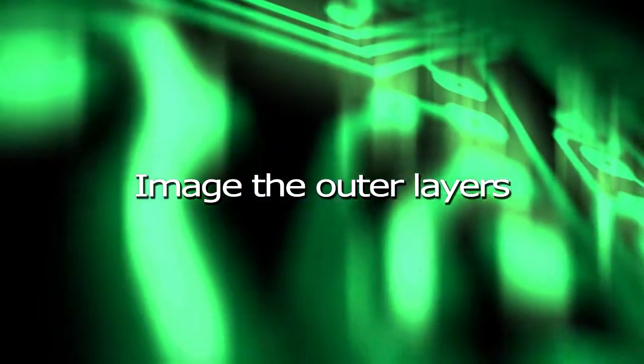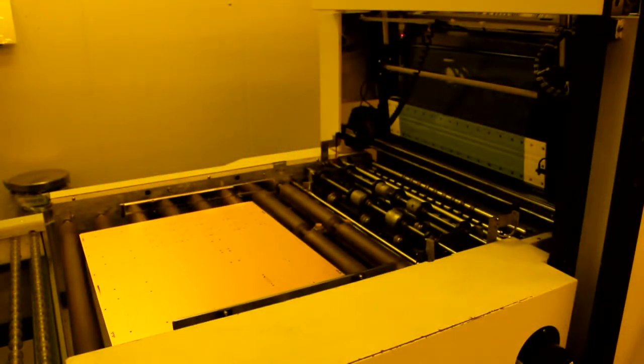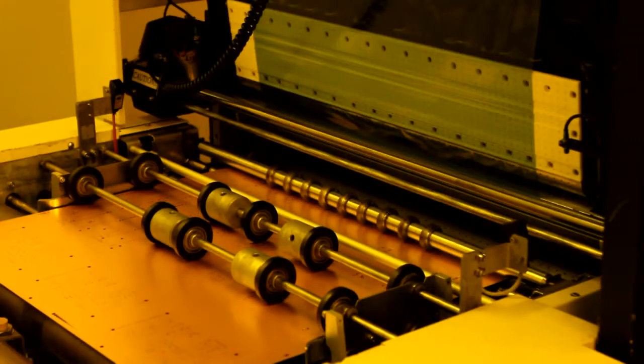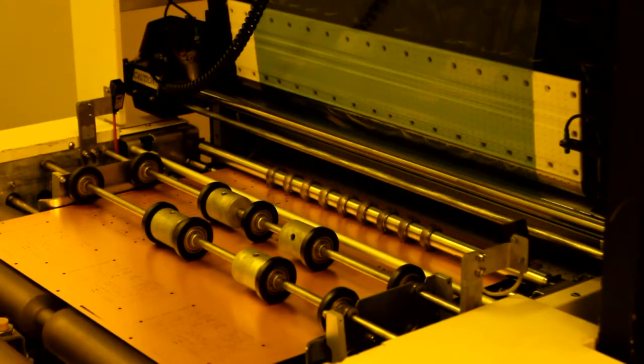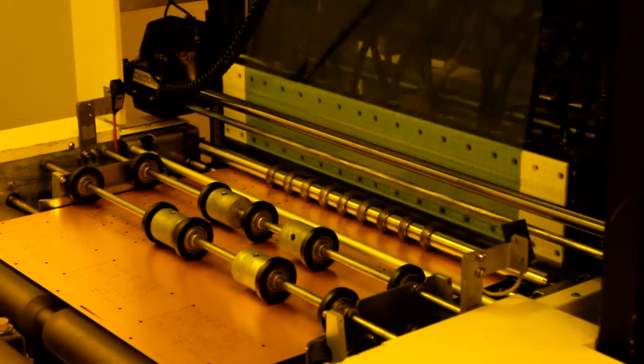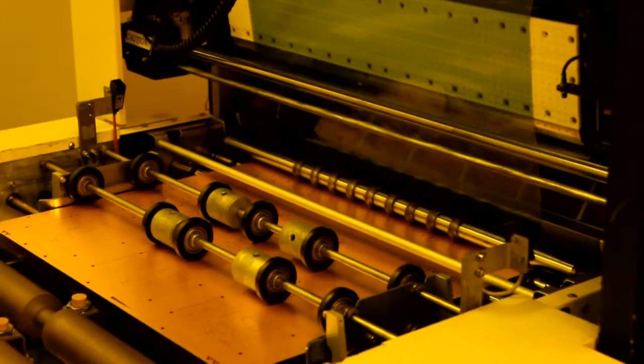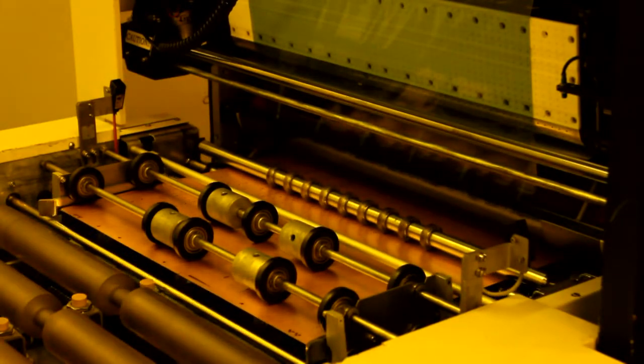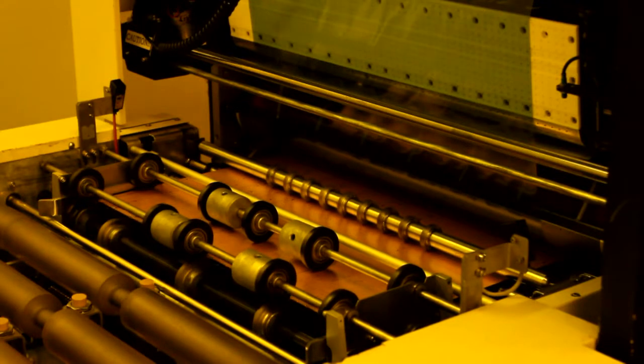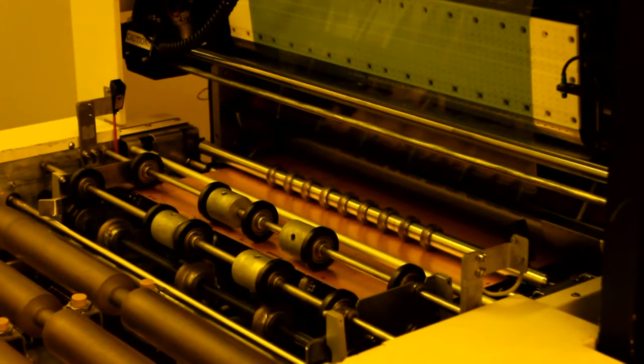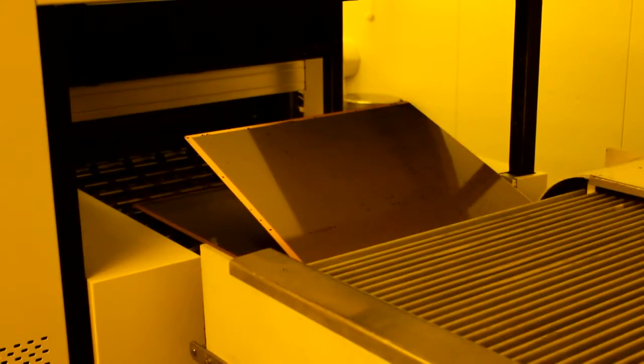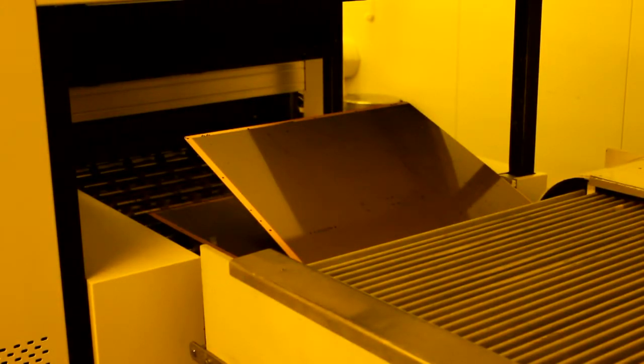Image the outer layers. We image the outer layers in a clean room to make sure that no dust gets onto the panel surface where it could cause a short or open circuit on the finished PCB. The panel is first coated with a layer of photosensitive film, the photoresist, which is hot rolled onto the copper using a cut sheet laminator. The laminated panels are collected by an automatic rack. The clean room uses yellow lighting as the photoresist is sensitive to UV light.